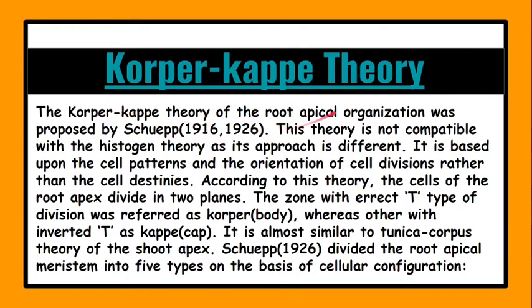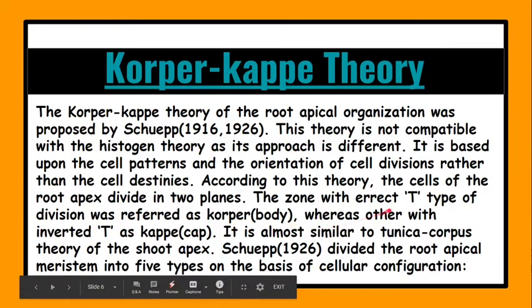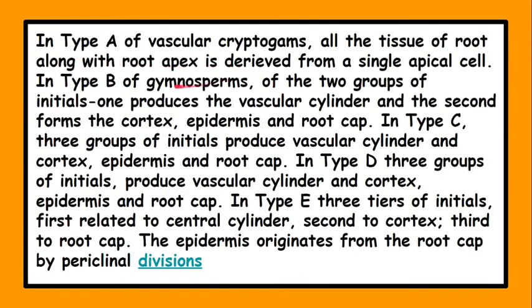The third is korper-kappe theory. This theory was proposed by Schuepp in 1916 and 1926. This theory is based upon the cell patterns and the orientation of cell division. According to this theory the cells of root apex divide in two planes. The zone with erect T-type divisions are referred to as korper or body, whereas the other with inverted T as the cap. This theory is also similar to the tunica-corpus theory of shoot apex.